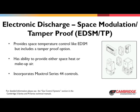Electronic Discharge Space Modulation Tamper Proof, or EDSM/TP. EDSM/TP may be used on both the S- and M-series products. EDSM/TP provides space temperature control. The discharge temperature modulates based on a space temperature set point, or STS. TP, which stands for tamper proof, allows the space temperature selector to be mounted inside the lockable remote control station, and the tamper proof stat to be mounted outside of the remote control station. EDSM/TP provides space heat and makeup air.